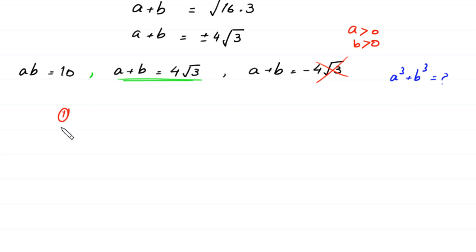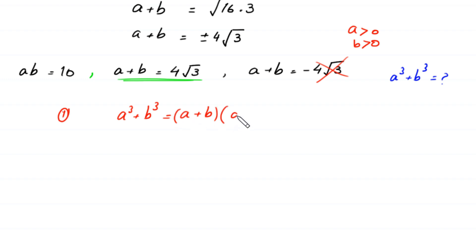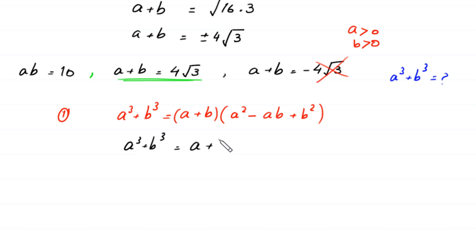For the first method, we use the algebraic identity a³ + b³ = (a + b)(a² − ab + b²), which can be rearranged as a³ + b³ = (a + b)(a² + b² − ab).